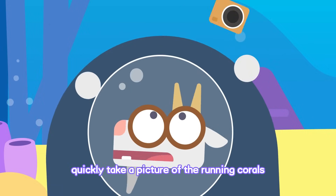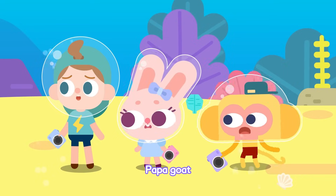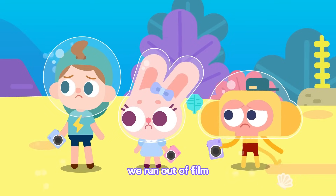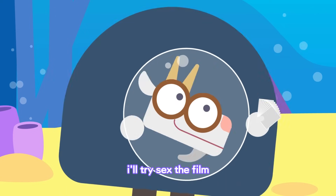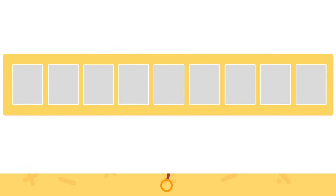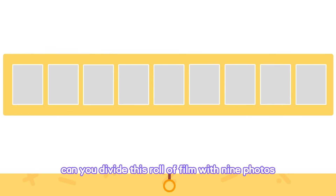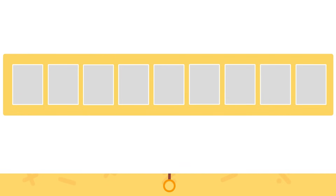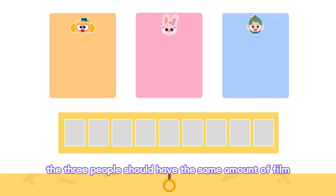Quickly take a picture of the running corals! Papa Goat! We've run out of film! I have nine more photos left on my roll. I'll trisect the film! To trisect something means to divide it into three equal parts. Can you divide this roll of film with nine photos into three equal parts? If we trisect this roll of film, the three people should have the same amount of film.